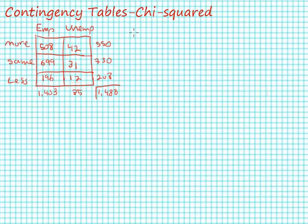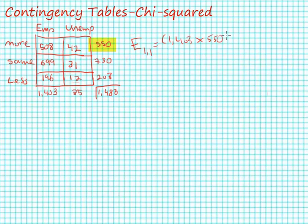I'm going to list this as my expected value for cell (1,1), and that's going to be equal to my column marginal 1,403 multiplied by my row marginal 550, and all of that divided by the table total 1,488. That gives me an expected number of cases of 518.6.